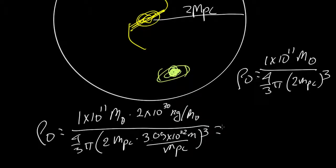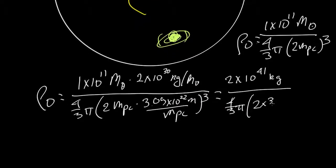And so in our little local part of the universe, there's 2 times 10 to the 41 kilograms, and then that is all in a volume where we have 4 thirds pi times 2 times 3.09 times 10 to the 22 meters per megaparsec. So the megaparsecs cancel, that whole thing is cubed.